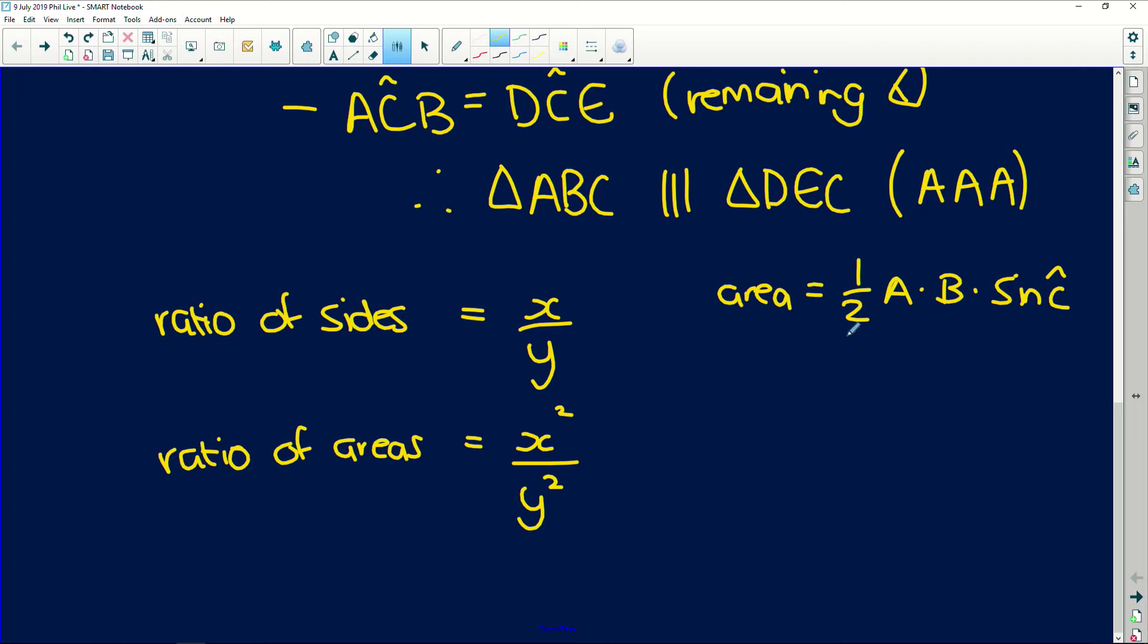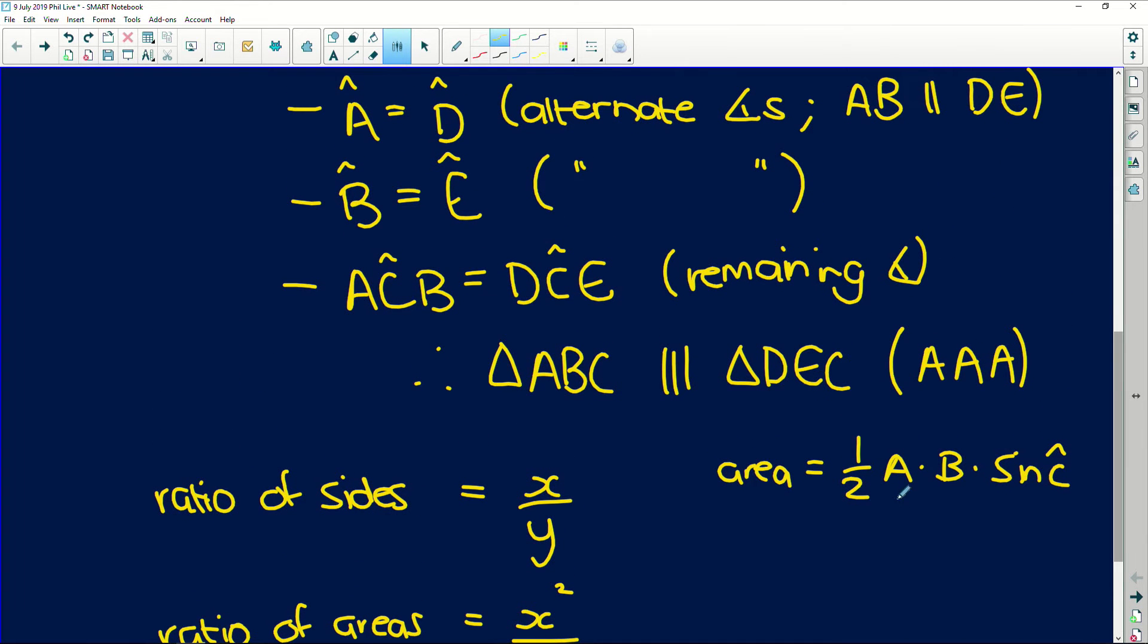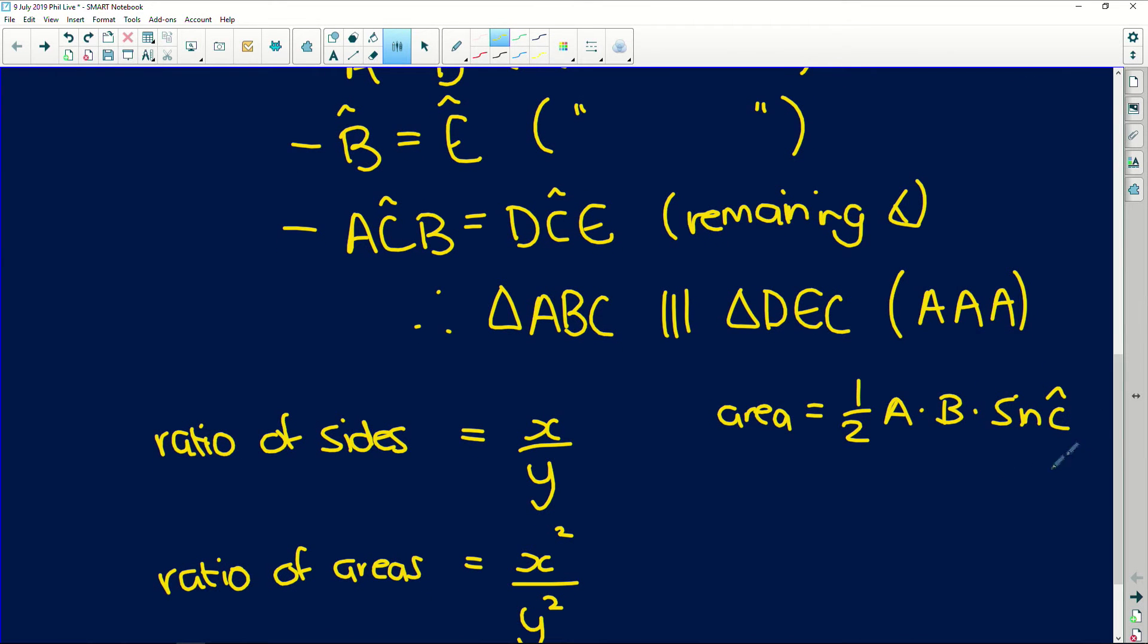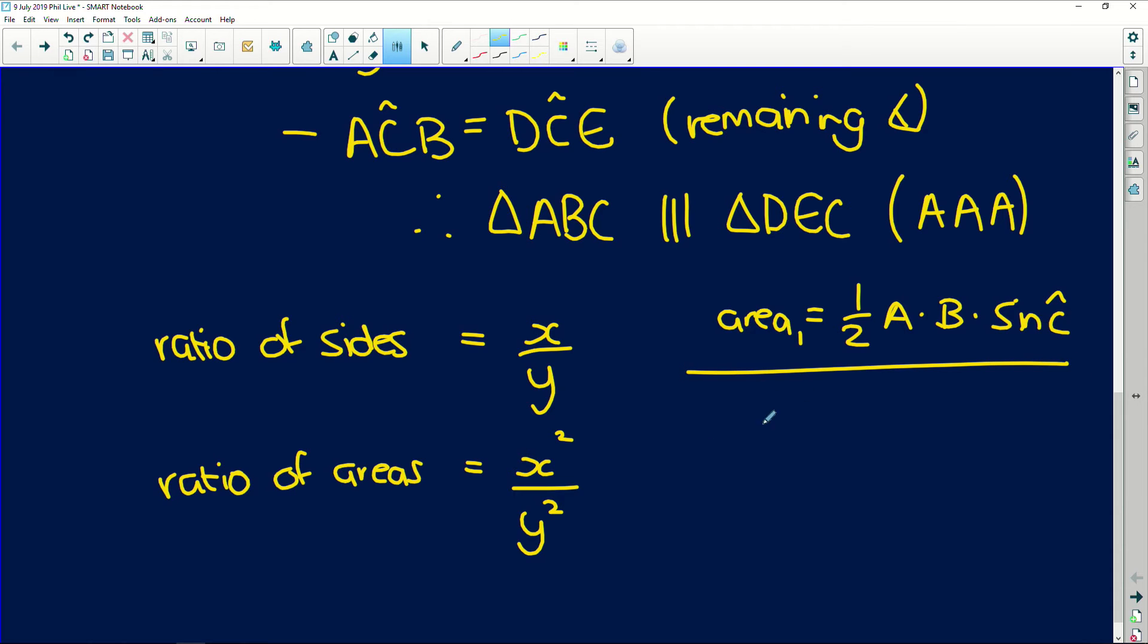So if I look at our first triangle, we're going to have one side multiplied by another side multiplied by the sine of C. And in your corresponding triangle, that angle of C is going to be equal. So if we have area one and area two, and we put it as a ratio, we're going to have half half. If the ratio between the sides is x and y, we're going to have x multiplied by A, because remember, you increase the side by a factor of x, multiplied by x, multiplied by B, and sine of C, because the angles are going to be the same. Remember, they're equiangular.